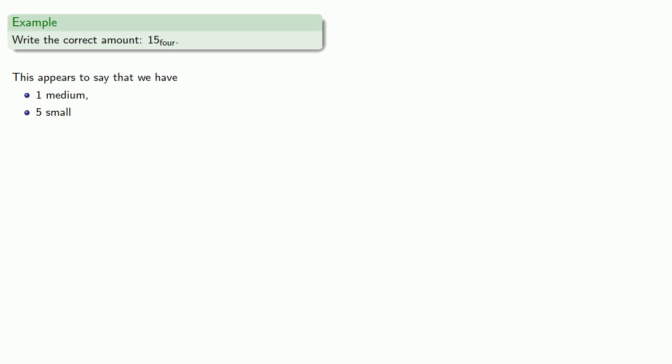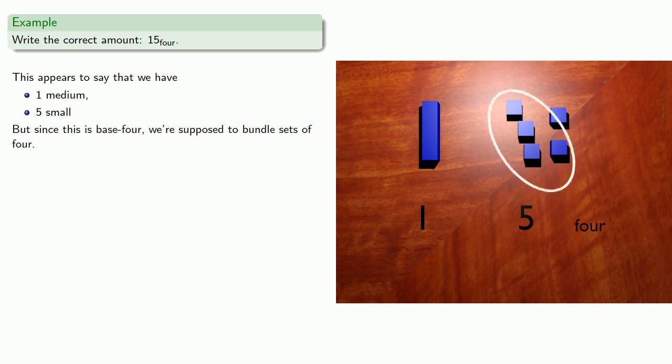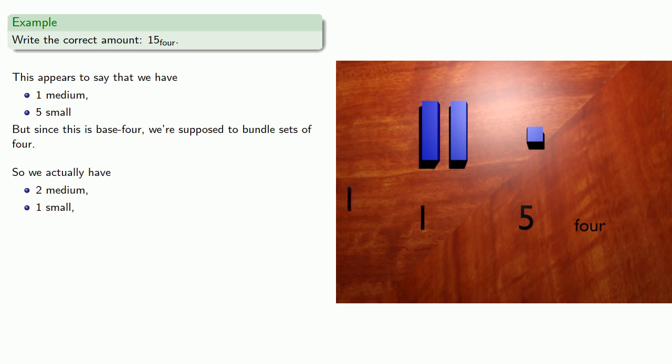Let's go ahead and draw that amount. But since this is base 4, we're supposed to bundle sets of 4. So here's a set of 4 we can bundle. And so we actually have 2 medium and 1 small. And the number should be written as 2, 1, base 4.